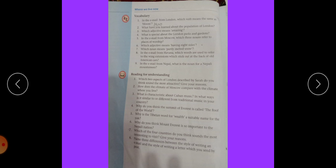Which adjective means having eight sided? Octagonal means having eight sided. Which noun means partly melted snow soft mud? In the email from Havana, which words are used to refer to the wing extensions which stick out at the back of old American cars? American cars with their metal tail fins. The answer is American cars with their metal tail fins.